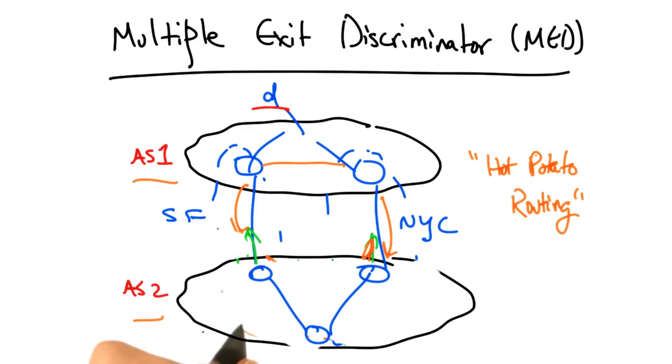In the absence of MED overriding any behavior, typically a router inside AS2 would learn multiple routes via internal BGP to different egress points for the same destination D, and it would simply pick the next hop, or the egress router, with the lowest IGP path cost, in this case 5.